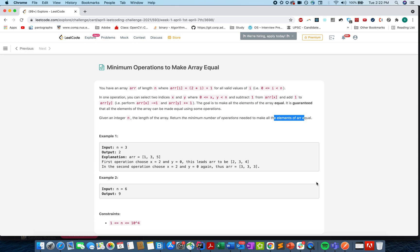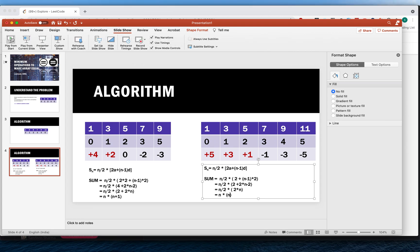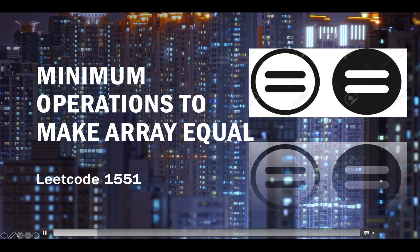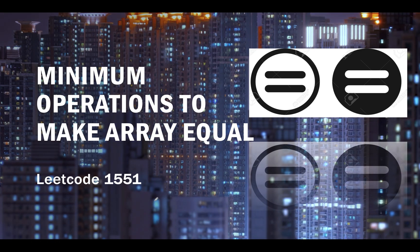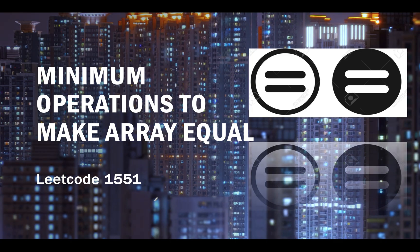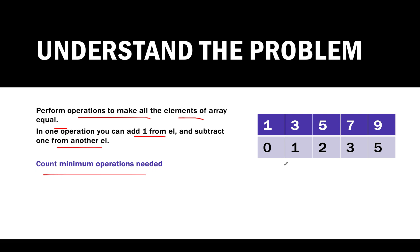Without much ado, let's look at the presentation I have created. Today's question is a mathematical question — pretty straightforward. If you know the basics of mathematics from class 9th and 10th you'll be able to do it. The problem says: perform operations to make all elements of the array equal. In one operation you can add one to an element and subtract one from another. Count the minimum number of operations needed.